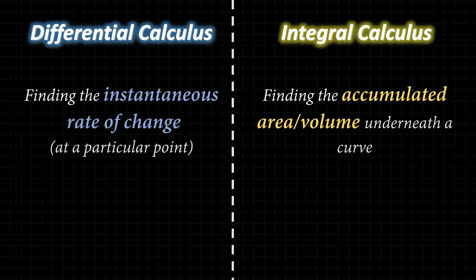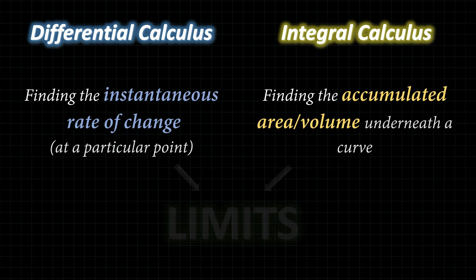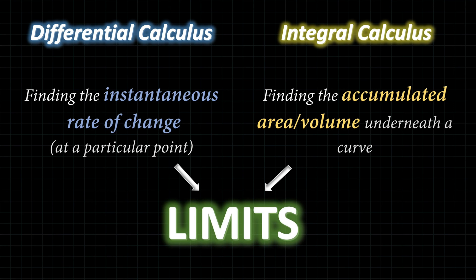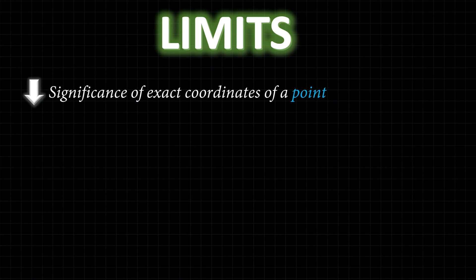So the million-dollar question: how? And the answer is simple — we use something called limits. Arguably, limits is the fundamental principle in calculus, as it allows us to think dynamically and not statically. When we use the limit, it lowers the significance of us knowing the exact coordinates of a point — actually, it lowers the significance of the point entirely.